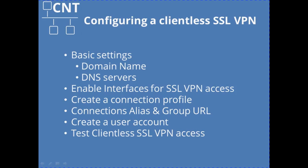Before we open the ASDM to start our configuration of the VPN, we will look at the steps required to set up a basic clientless SSL VPN. The first step is to make sure we have a domain name and DNS servers configured to allow the VPN to resolve host names on the internal network. Next we will enable SSL on the outside interface of the Cisco ASA. Then we will create a connection profile and configure an alias and group URL. Finally we will create a user account to login to our clientless SSL VPN.